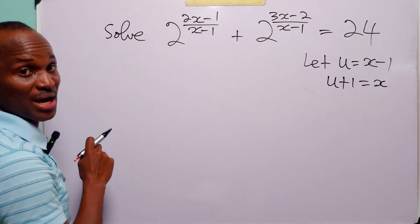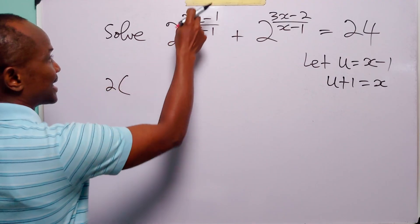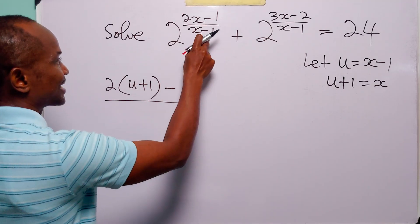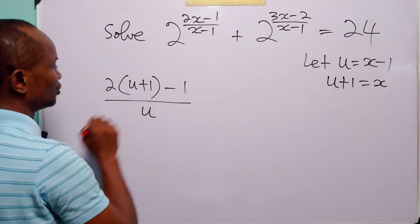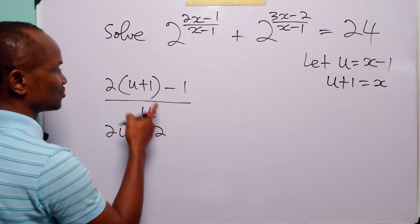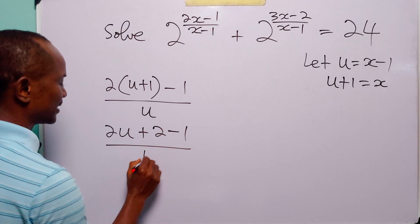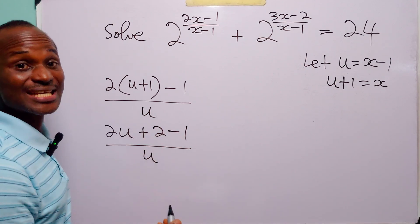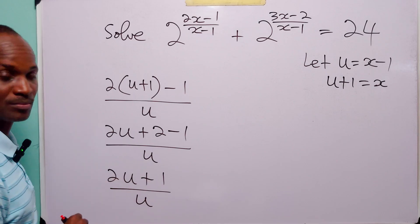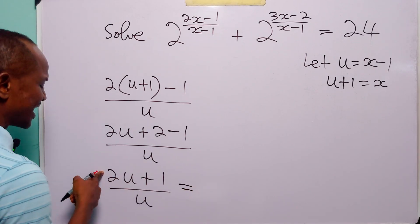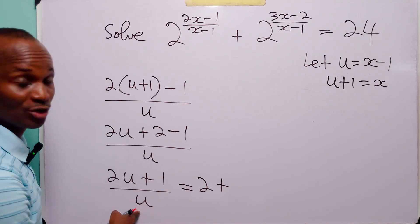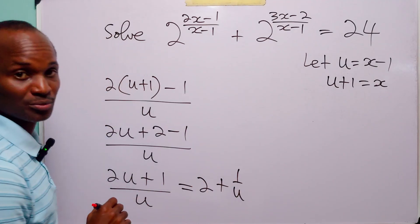Now let us look at this first exponent. We have 2 times x, where x is u plus 1, minus 1 divided by x minus 1, which is equal to u. Opening this bracket, we have 2u plus 2 times 1, which is 2, minus 1, divided by u. Of course, 2 minus 1 is equal to 1. So here we have 2u plus 1 divided by u. If we divide 2u by u, we get 2, and if we divide 1 by u, we get 1 over u.